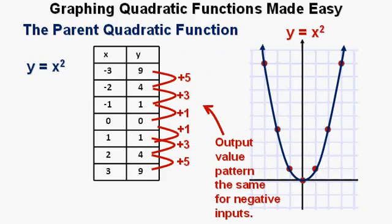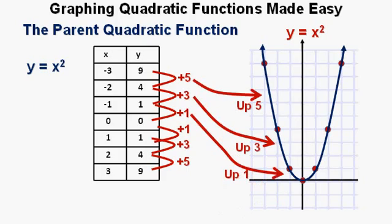And because of symmetry, the plus 1, plus 3, and plus 5 output sequence applies to inputs going negative from 0 as well. And this is how that pattern translates to the coordinate plane: up 1, up 3, up 5.